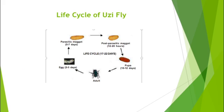In this picture we will be discussing the life cycle of Uzi fly. The female lays 500 to 600 eggs during her lifetime, i.e., over 18 to 22 days. Eggs hatch in 2 to 3 days. Maggots after hatching immediately pierce into the skin of the silkworm.